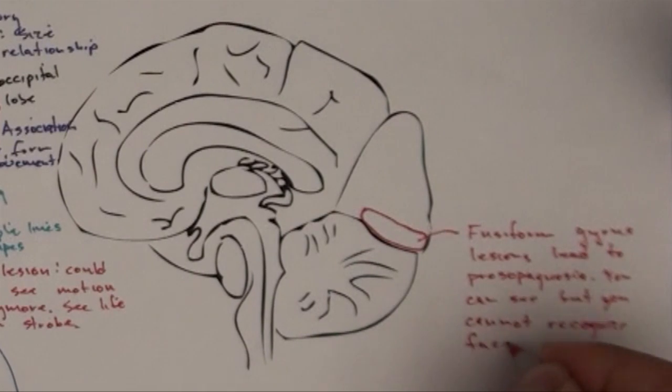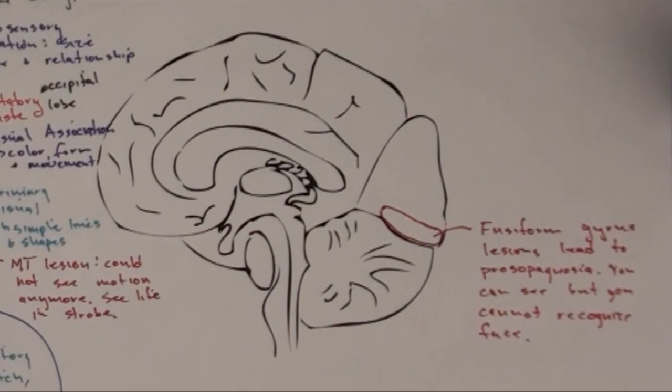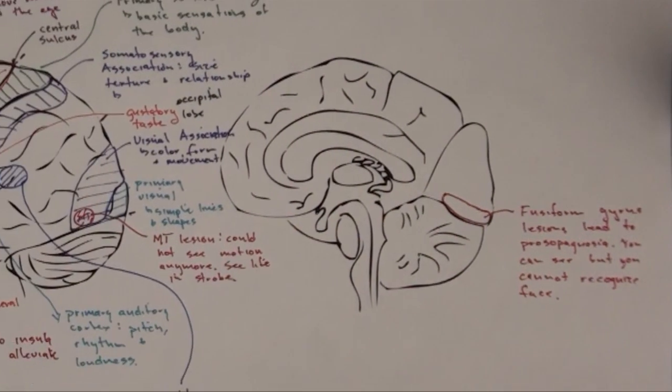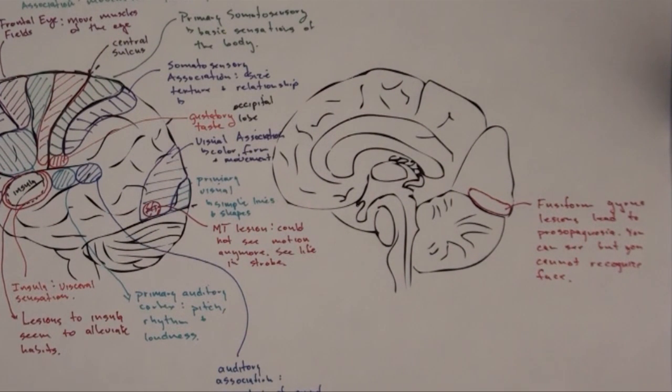So the point of showing both of these lesions is to show you that vision is kind of in very tiny little parts. You can lose just motion of vision. You can lose just the part of your visual system that senses faces too. So it's all pretty compartmentalized.